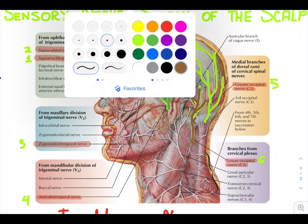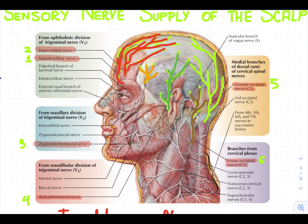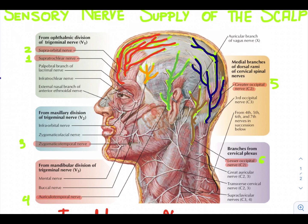Finally, we have the greater occipital nerve. Let's trace it on the diagram. This is the greater occipital nerve. The greater occipital nerve is a branch of the posterior ramus of the second cervical nerve. It ascends over the back of the scalp and supplies the skin as far forward as the vertex of the skull.